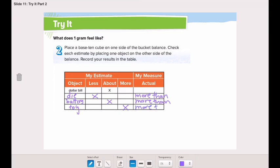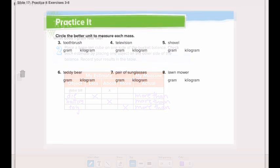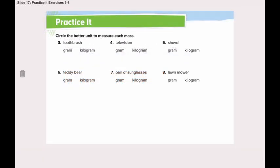What does this tell us? It tells us that one gram is a very small amount — it's not a big item. Even a small die weighs more than one gram. Let's open page 647 in our book and solve the first two questions together.